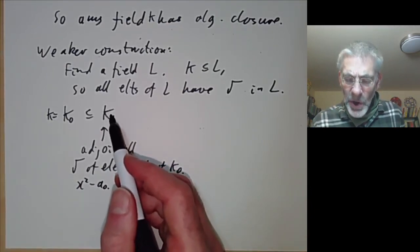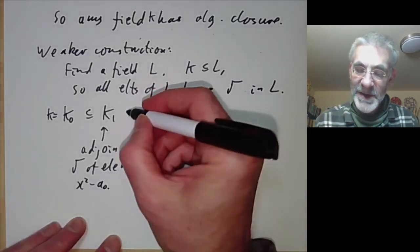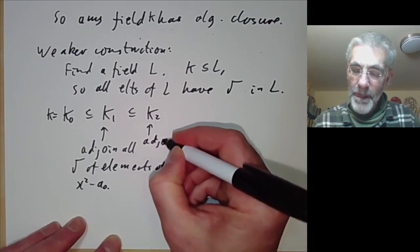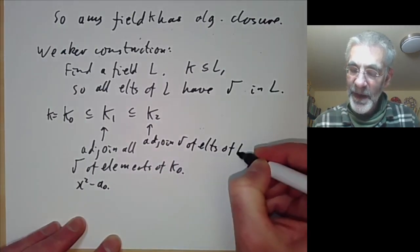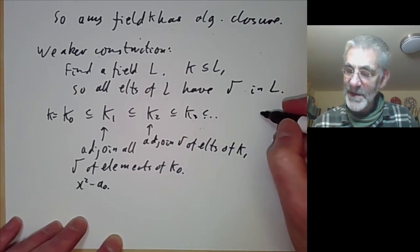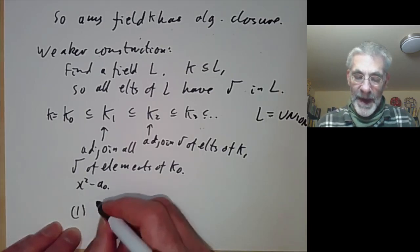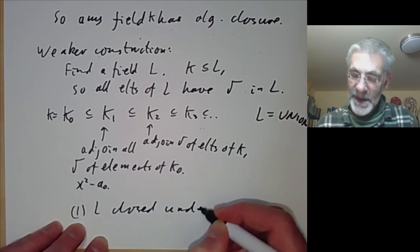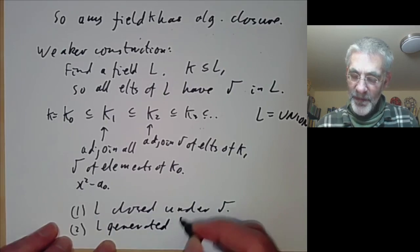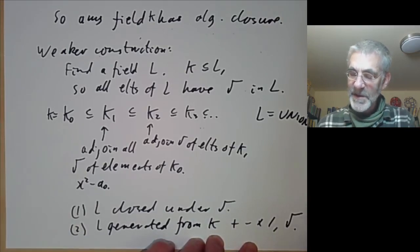k1 is not necessarily closed under taking square roots, but that doesn't matter. We can extend it to a bigger field where we adjoin square roots of elements of k1 and continue this. Let L be the union of all these fields. Then L is closed under taking square roots, and L is generated from k by the usual field operations — plus, minus, times, divide — and taking square roots.